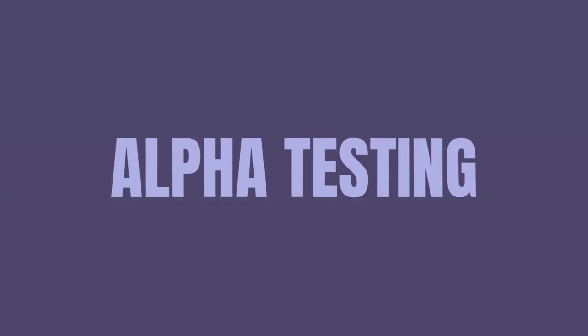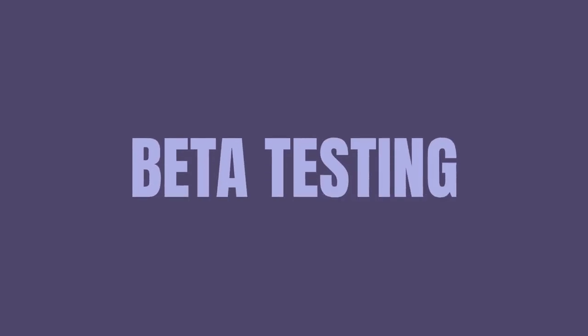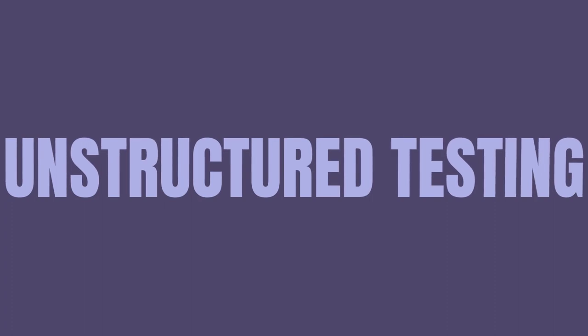You can call it alpha testing — it's predominantly about ensuring bug-free functionality. Beta testing is about releasing the software to a limited number of real users who are free to use it as they want. In other words, beta testing is unstructured.